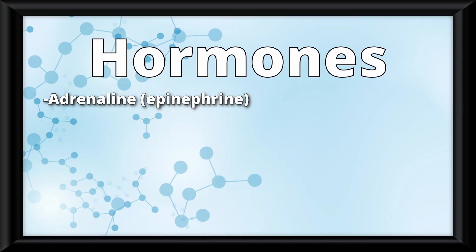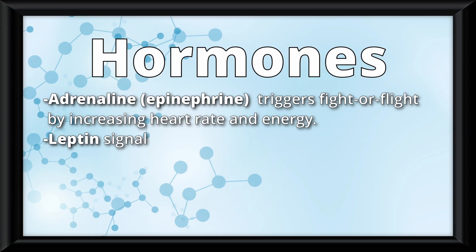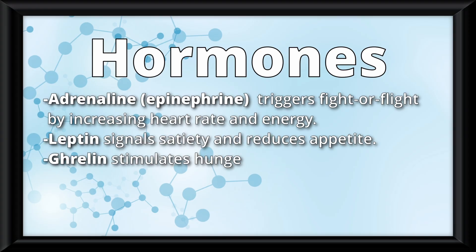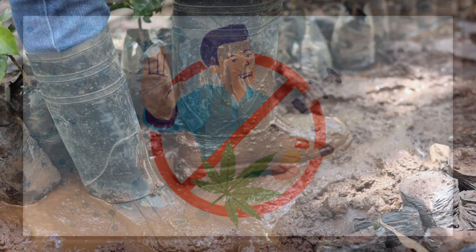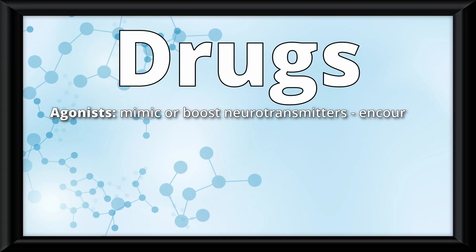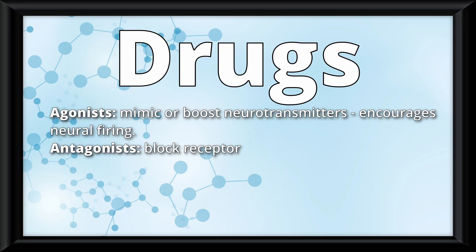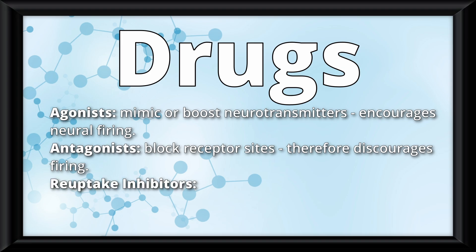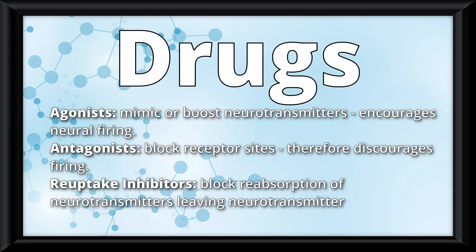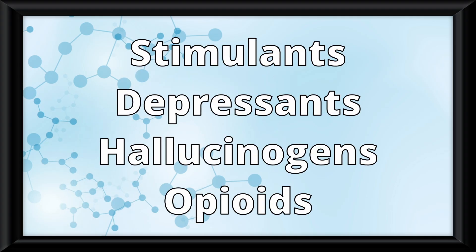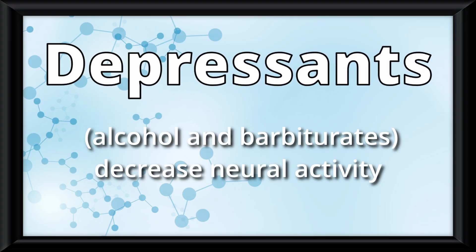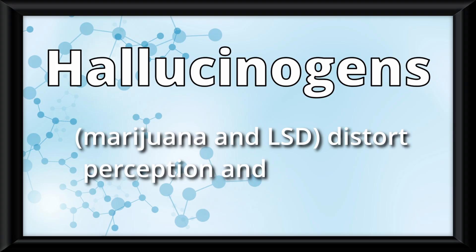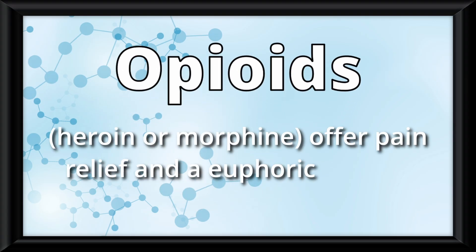Let's go through some hormones. Adrenaline, or epinephrine, triggers fight or flight by increasing heart rate and energy. Leptin signals satiety and reduces appetite. Ghrelin stimulates hunger. Melatonin regulates sleep-wake cycles. And oxytocin promotes bonding, trust, and social connection. When you introduce drugs, they disrupt the entire process of a neuron. Some drugs act as agonists, which mimic or boost neurotransmitters, encouraging neural firing. Some act as antagonists, which block receptor sites and discourage firing. And some act as reuptake inhibitors, which block reabsorption of neurotransmitters, leaving more in the synaptic cleft. Drugs come in four forms: stimulants like caffeine, nicotine, and cocaine cause increased neural activity; depressants like alcohol and barbiturates decrease it; hallucinogens like marijuana and LSD distort perception and cognition; and opioids such as heroin or morphine offer pain relief and a euphoric feeling.